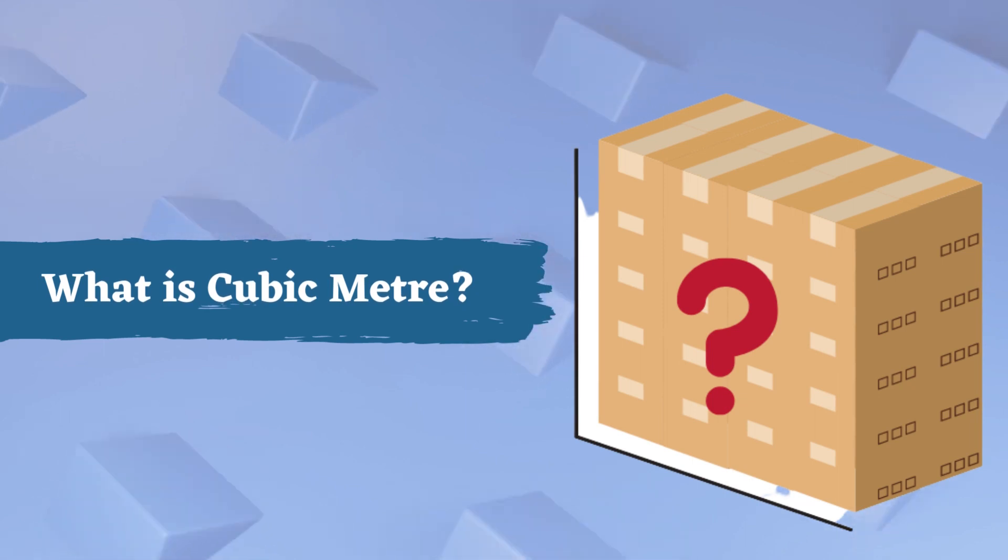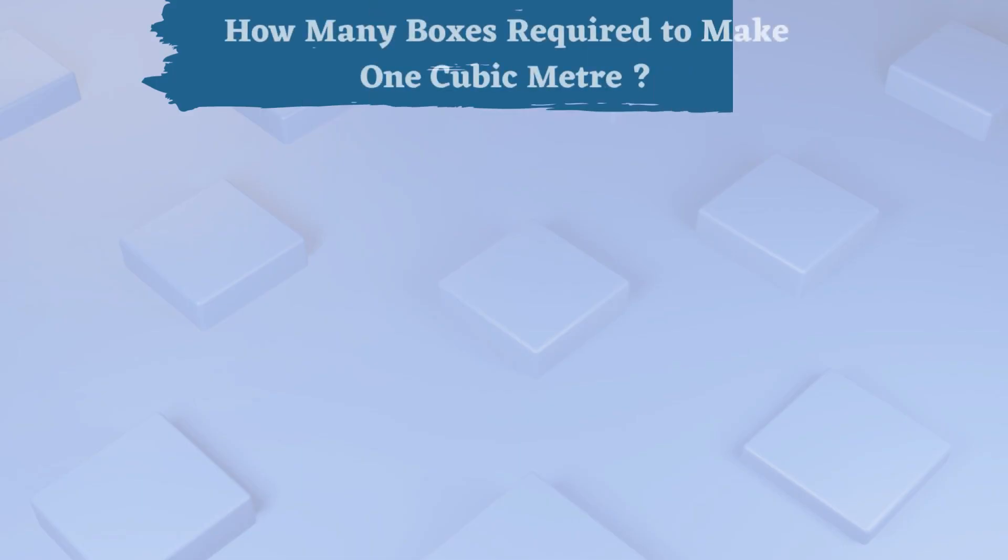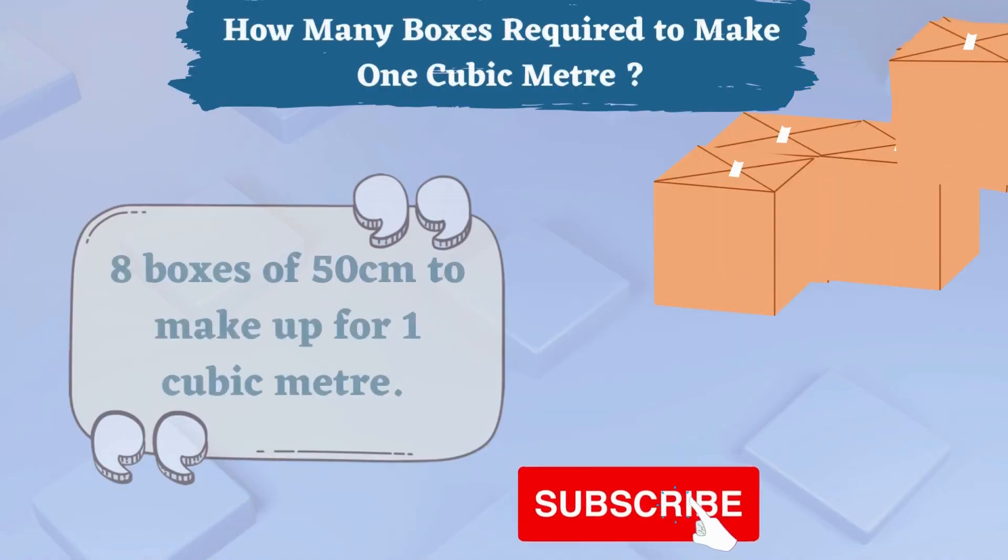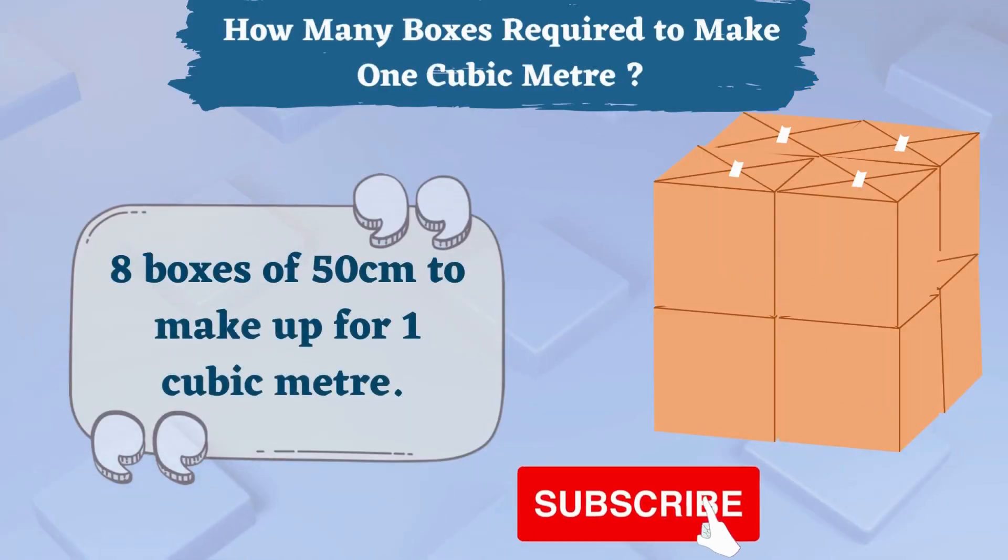It is a unit that measures the volume of a cube. More specifically, it is a block of space. Suppose you have a box of 50 centimeters, then it will take 8 boxes of 50 centimeters to make up 1 cubic meter. 8 boxes of 50 × 50 × 50 equals 1 cubic meter.